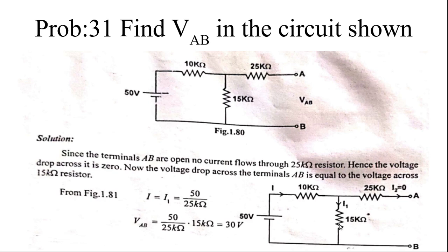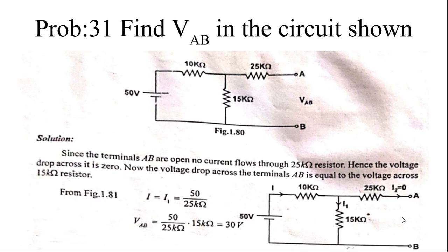Then you have to find the voltage across the 15 kilohm resistor. You should apply the voltage divider rule, which is applied when the source voltage is connected across series resistors. The individual voltage drop across the 15 kilohm resistor is: V × 15k / (10k + 15k) = 50 × 15/25 = 30 volts. Alternatively, Vab = I × R = I × 15 kilohm = 30 volts. So Vab = 30 volts.